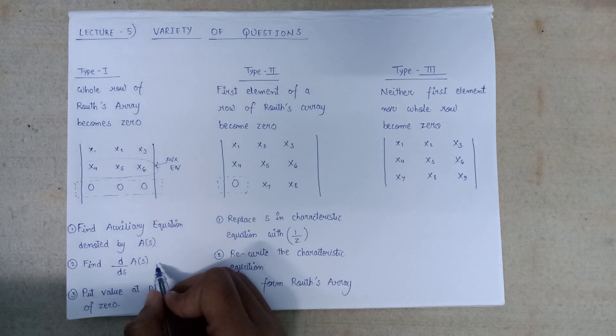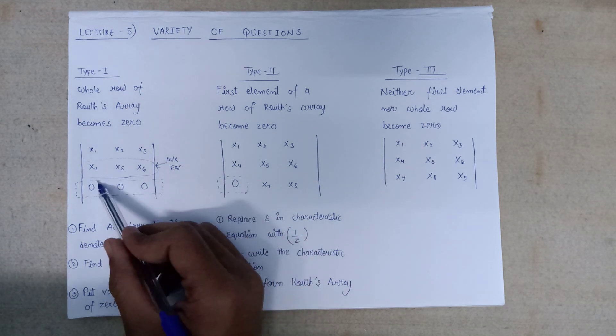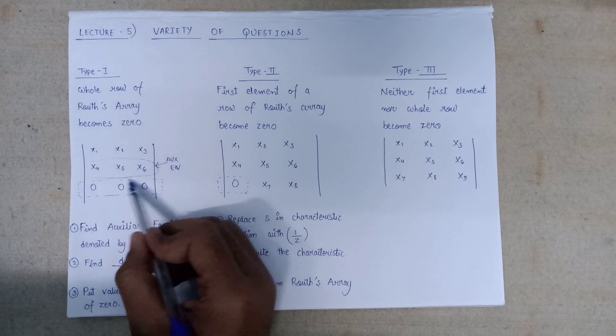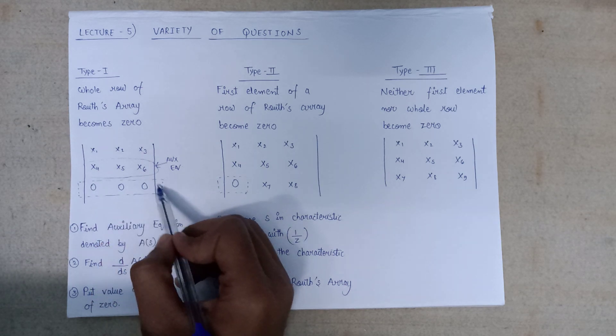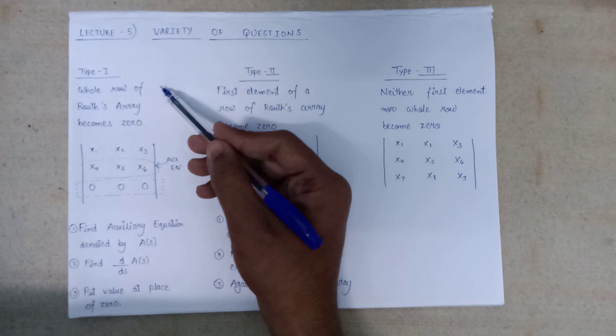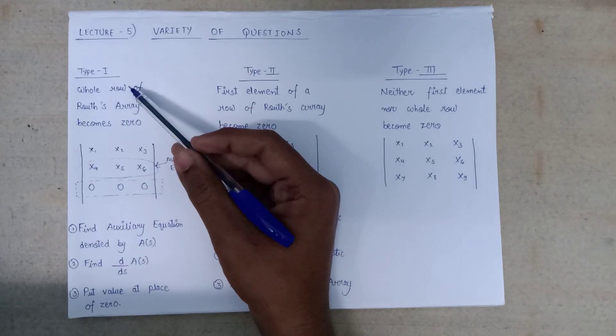The equation that we get as output will be our result. We are going to separate the output's coefficients and put those coefficients in place of the all-zero row. In this way, we are going to deal with Type 1 questions.